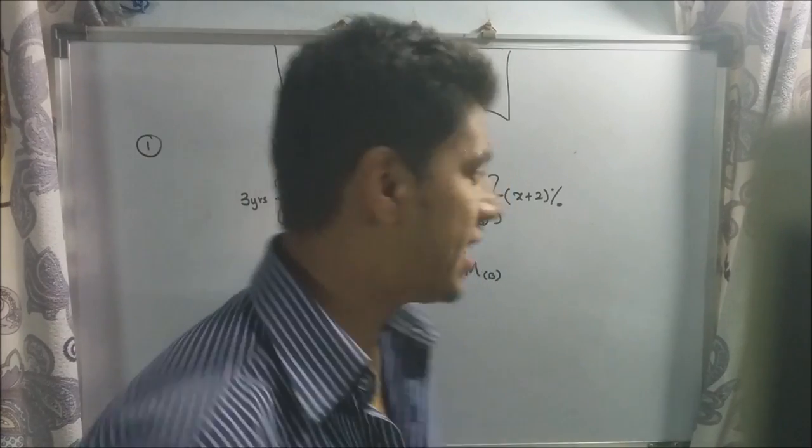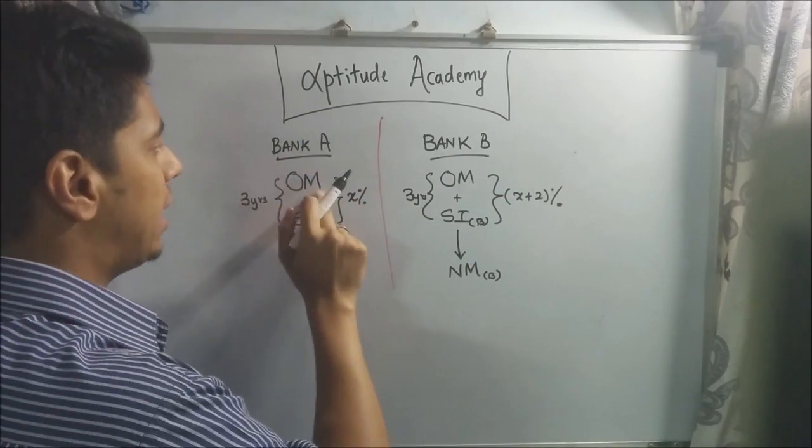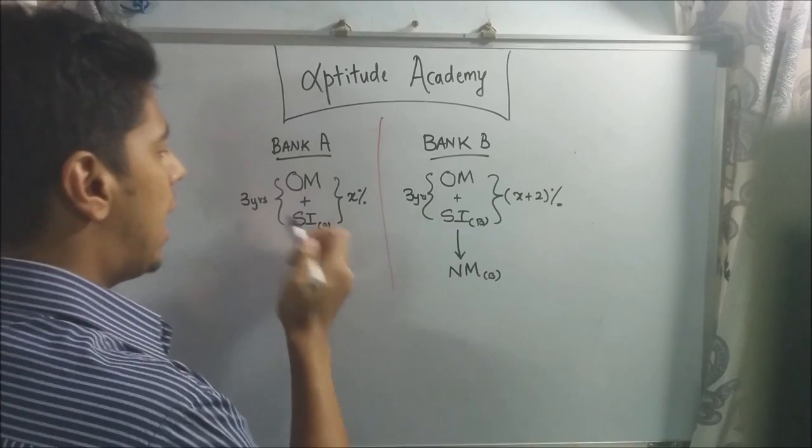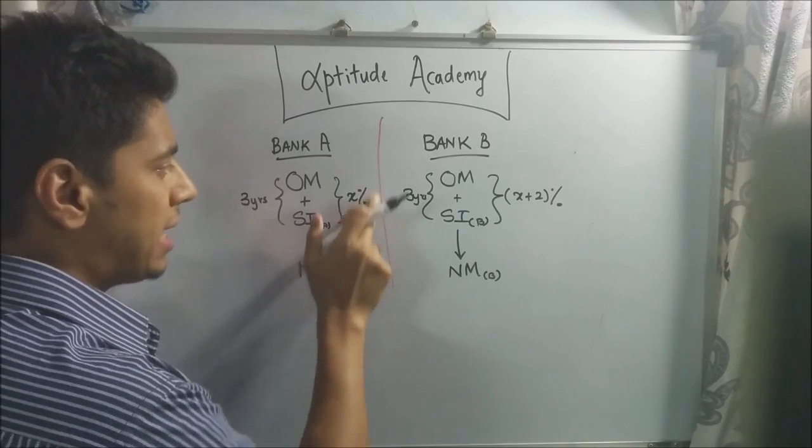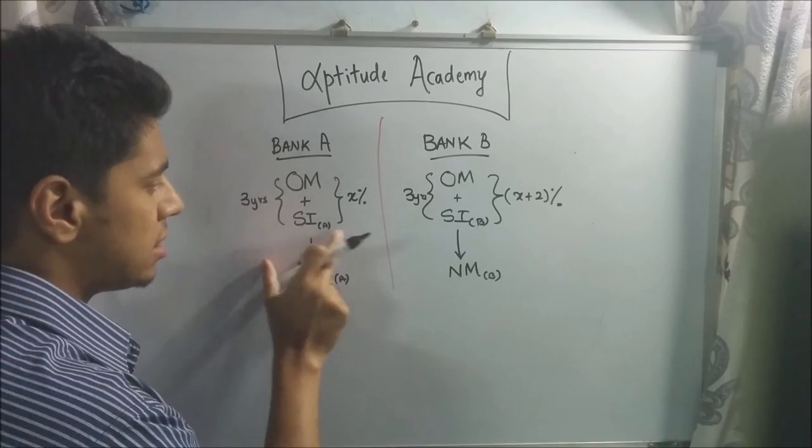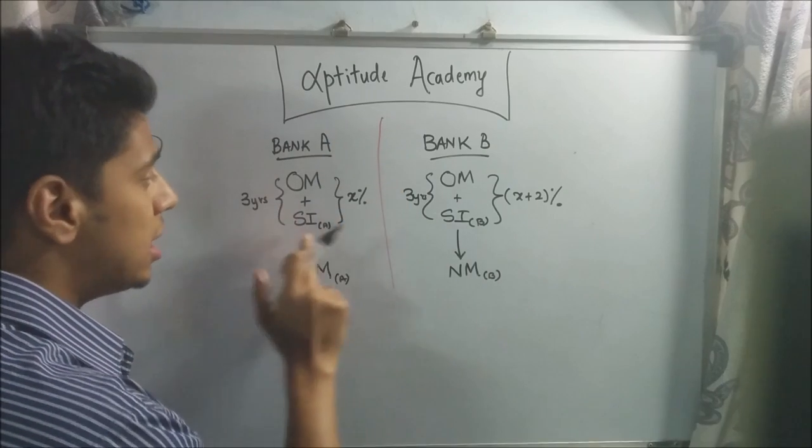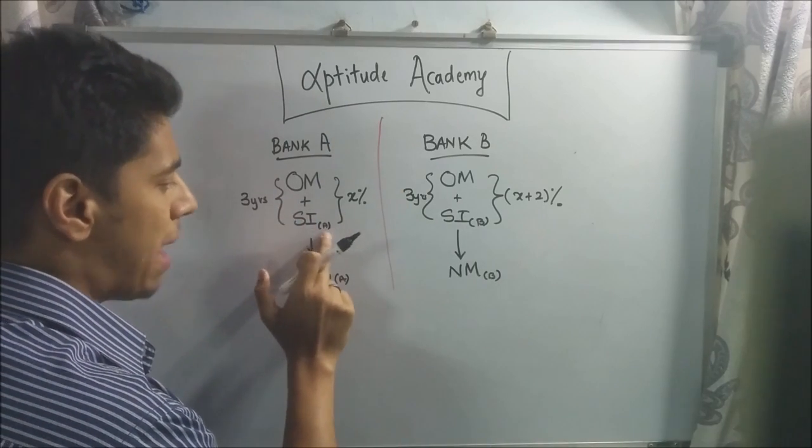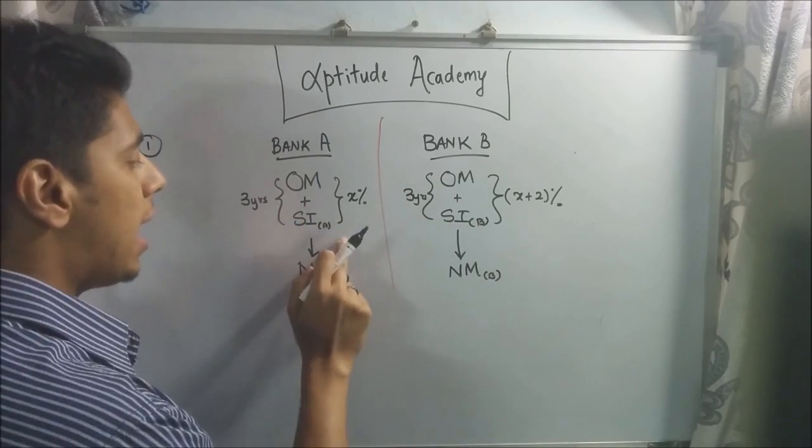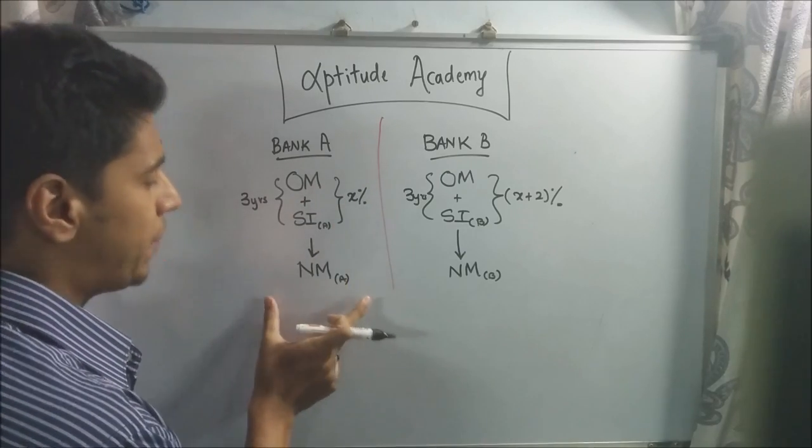All right. Now, for your second sum, they've said that you put your old money in a bank, your principal amount, and you've put it for three years at some X percent rate of interest. So now, based on these two terms, you will get some simple interest. I'm just saying bank A. Just assume that you've put it in bank A. So you'll get a simple interest from bank A, and based on that, old money plus SI, you will get your new money, NMA.